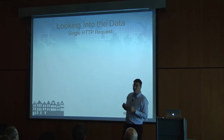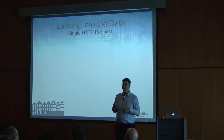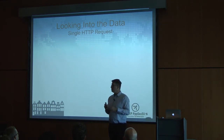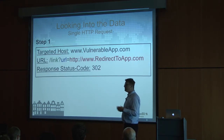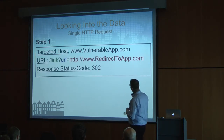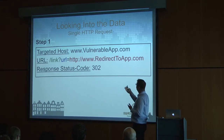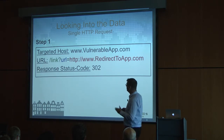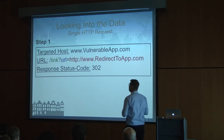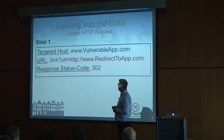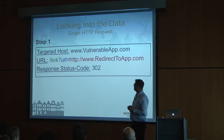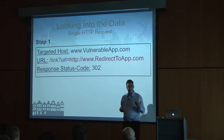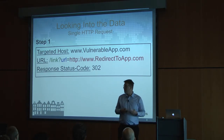In many cases when we do that, we start from bottom to top. We look at the very basic unit of data — in our case, HTTP requests. Once we looked at that request, we were able to see that this is a request going to vulnerableapp.com. We can see that someone is going to the link page with a parameter named URL, and in that parameter, we can see a domain name. We can also see a response status code 302 coming from the server.